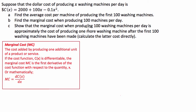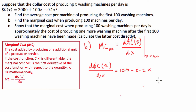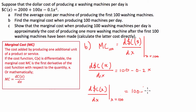So in this case, when we're producing 100 machines per day, the marginal cost we're asked to find at 100 is going to be equal to the derivative of the cost function with respect to the amount we're producing, evaluated at x equals 100. Taking the first derivative of our cost function, this is going to be equal to 100 minus 0.2x. So now to find the answer for part B — the marginal cost when producing 100 machines per day — we evaluate this when x equals 100: dc/dx when x equals 100 is equal to 100 minus 0.2 times 100, which is equal to $80.